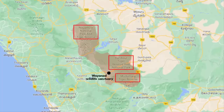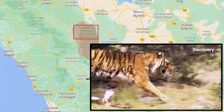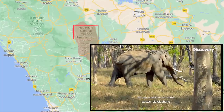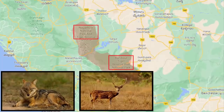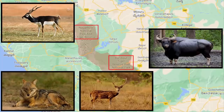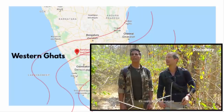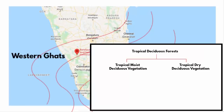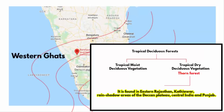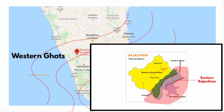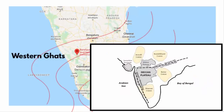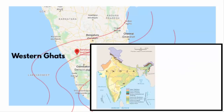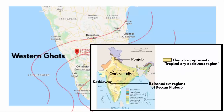Bandipur Tiger Reserve has the second highest tiger population in India. Apart from tigers, Bandipur National Park is also home to Indian elephants, jackals, spotted deer, bison, antelopes and numerous other native species. Here in the background you can see Dry Thorn Deciduous Forest, which is part of Tropical Dry Deciduous Vegetation. You will find this kind of vegetation in eastern Rajasthan, Kathiawar, rain shadow areas of the Deccan Plateau, Central India and Punjab.